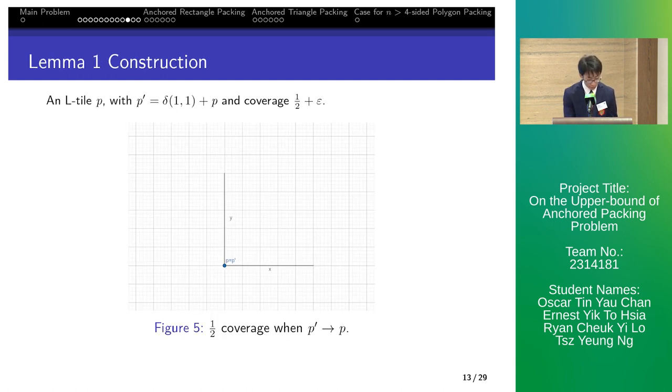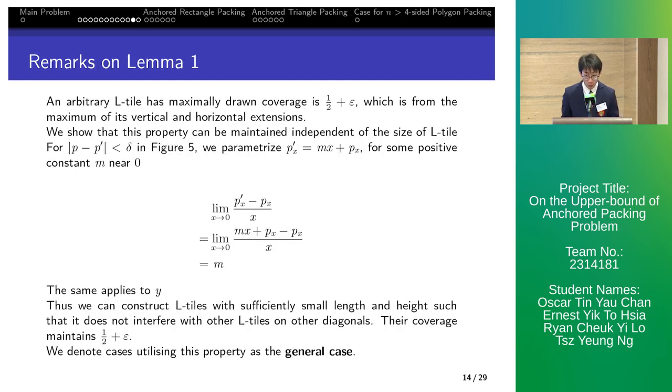We note that only a point p' is needed for the construction of L tiles on p. Thus, L tiles can fill a diagonal by tessellation. An L tile has a coverage of 1 half plus epsilon. This holds true independent of the size of L tiles.